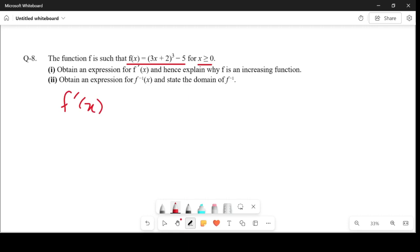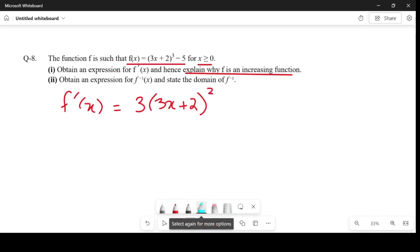Let's derive this first. The 3 will come down, we'll get (3x+2), and the power will be reduced by 1, so we get 2. Remember that we also need to differentiate 3x+2 and multiply the answer here, so that would be 3. The derivative of -5 is 0, which we don't have to write. So we get 9(3x+2)² as the derivative of f(x).